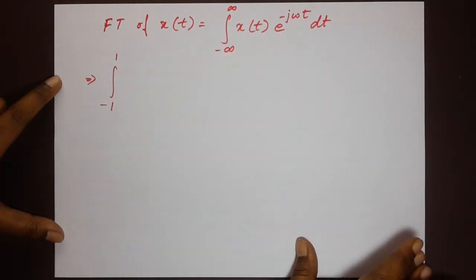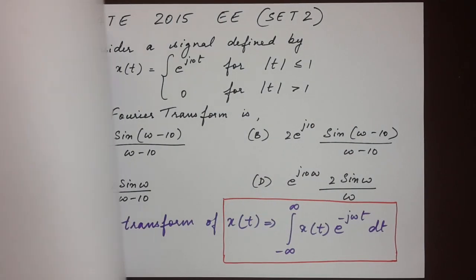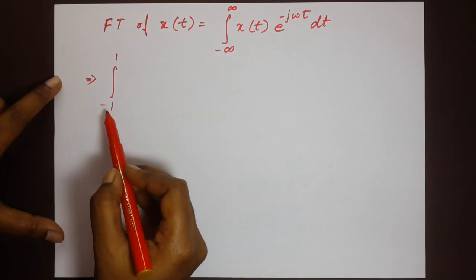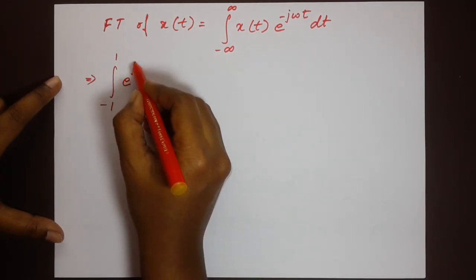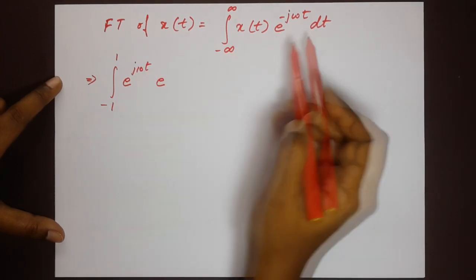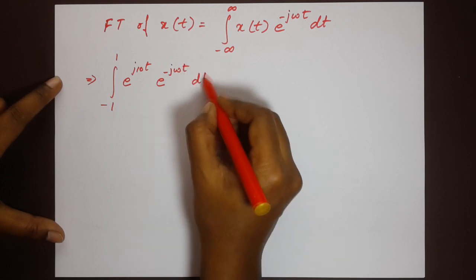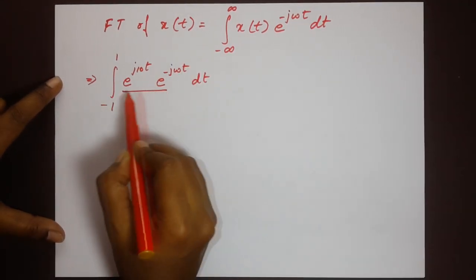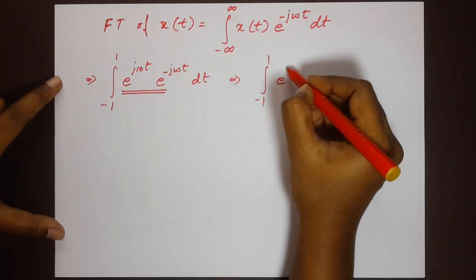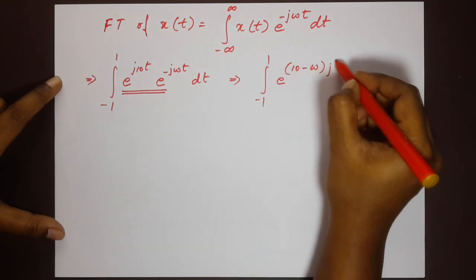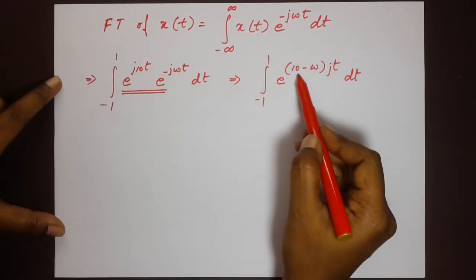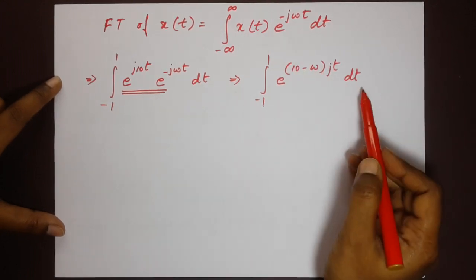Since |t| ≤ 1, the integral runs from −1 to 1. Substituting x(t) = e^(j10t), we get the integral from −1 to 1 of e^(j10t) · e^(−jωt) dt. Combining the exponents, this becomes the integral from −1 to 1 of e^(j(10−ω)t) dt.